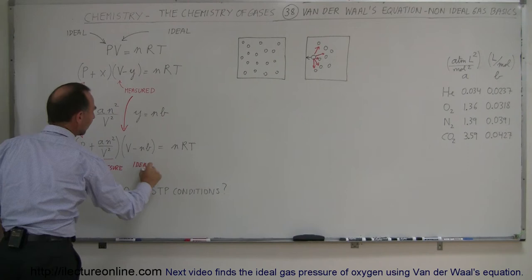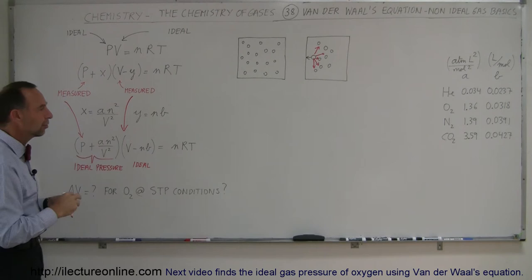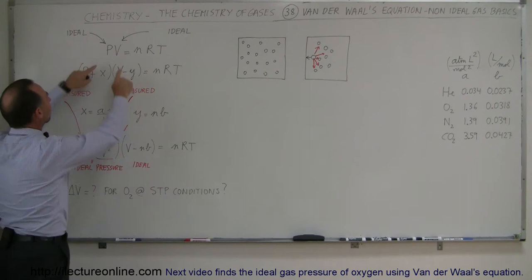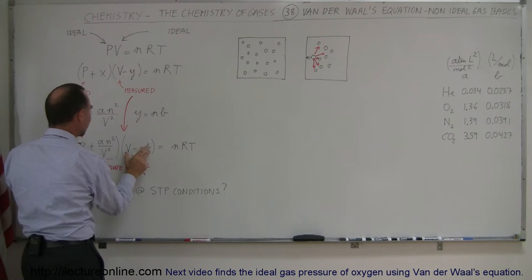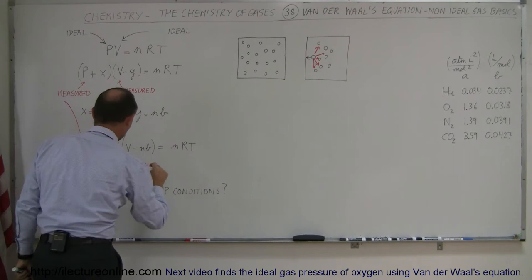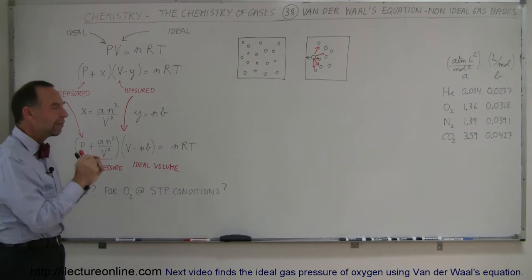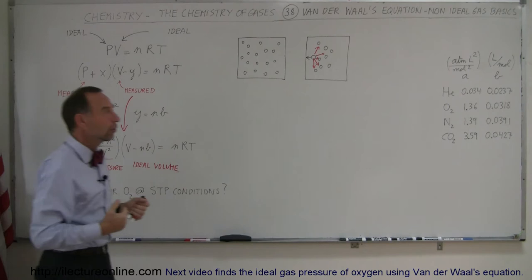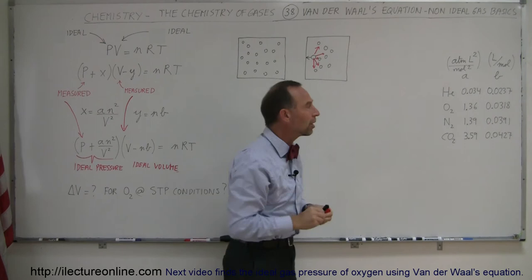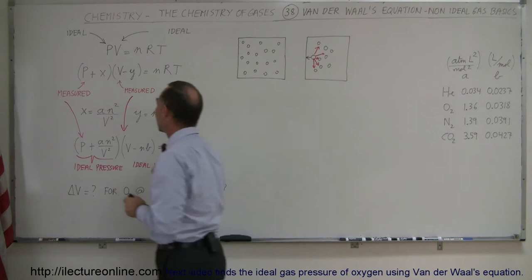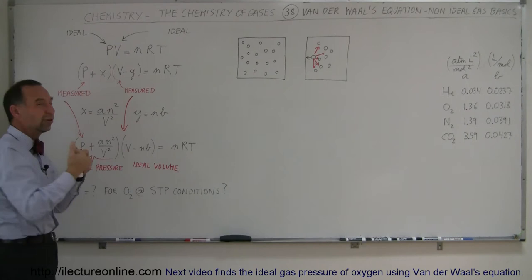This is the ideal pressure and this is the ideal volume. If we use measured values of pressure and volume under dense or very high-pressure gas conditions, the measured values plugged into the equation will not give quite the right results. We have to adjust them so that when we plug in the adjusted values, we do get the right results. Van der Waals and other scientists measured the effects of volume change and pressure change for different gases.